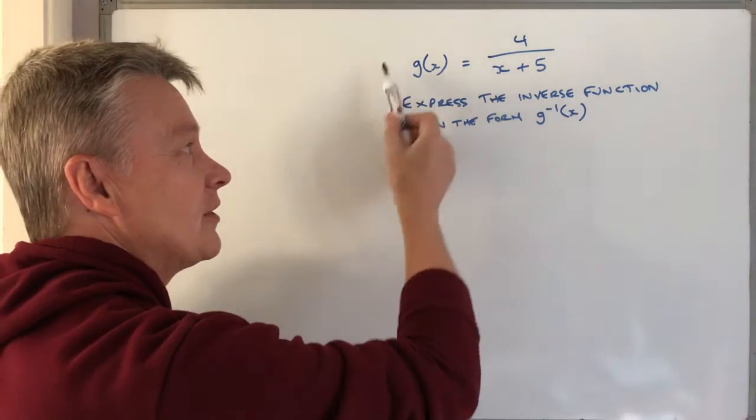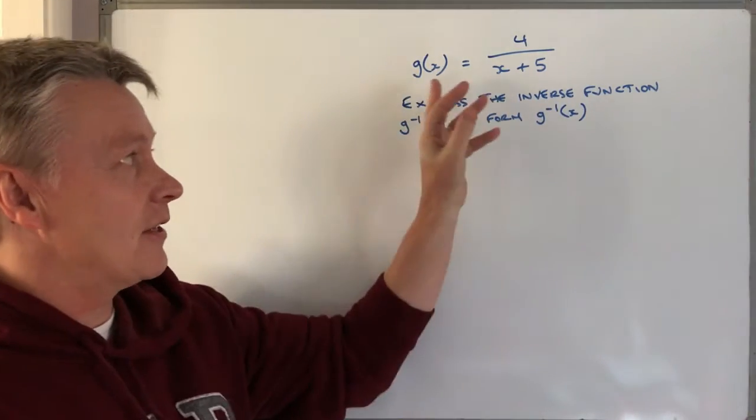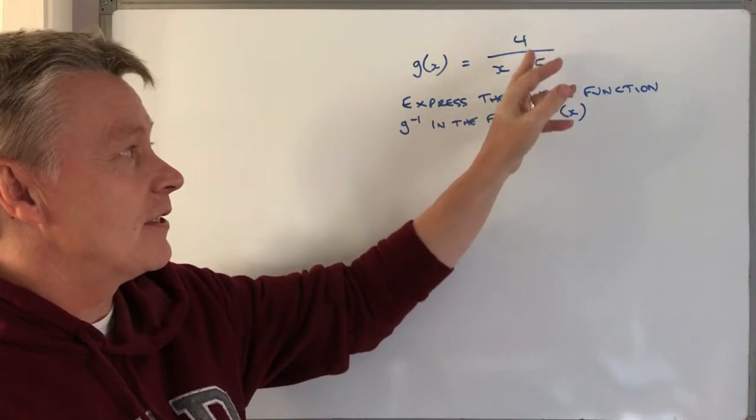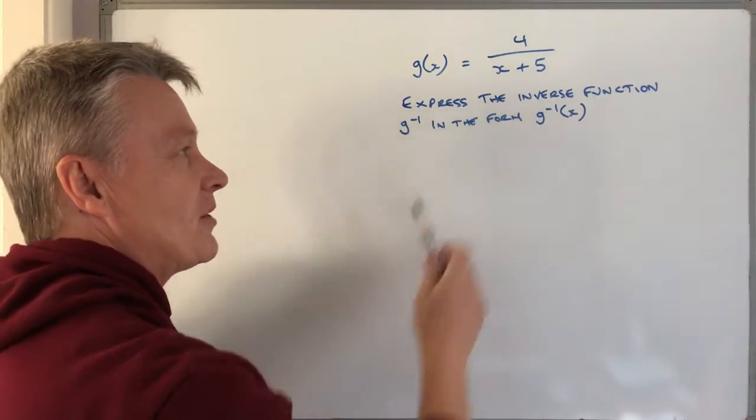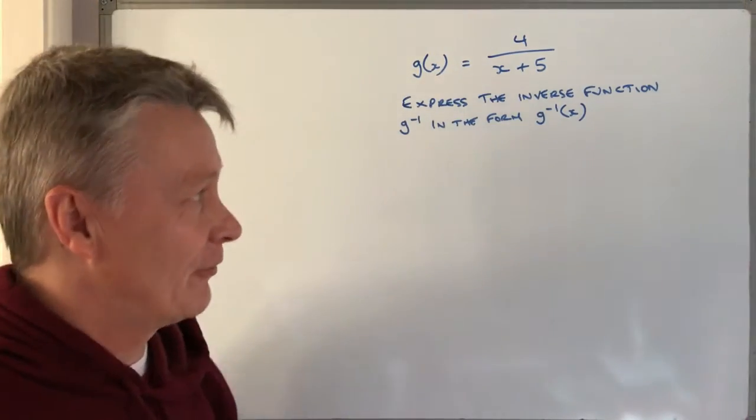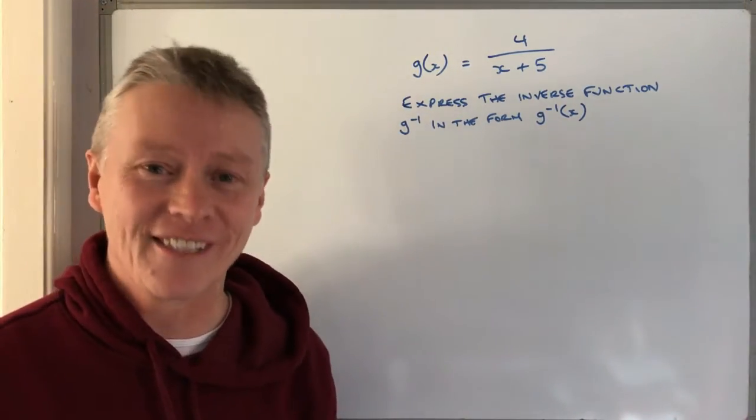We're given this function g, where g(x) = 4/(x+5), and it says express the inverse function g^(-1) in the form g^(-1)(x).